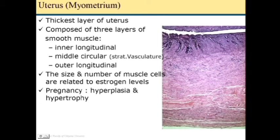The myometrium is the muscle of the uterus — the muscularis — and is the thickest layer. It is composed of three layers of smooth muscles: inner longitudinal, middle circular, and outer longitudinal. The size and number of muscle cells are related to estrogen levels. In pregnancy, hyperplasia and hypertrophy occur. The smooth muscle of the pregnant uterus can attain a length of 500 microns, compared to the usual 10 to 100 microns, due to hypertrophy and hyperplasia under estrogen and progesterone stimulation.